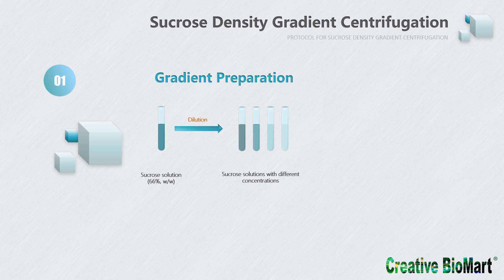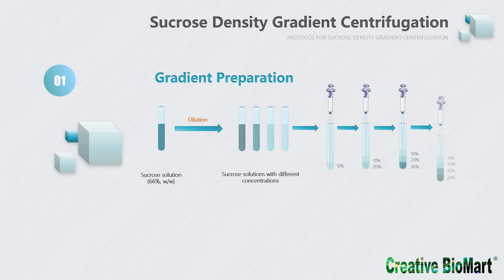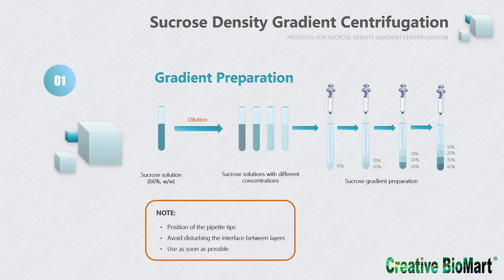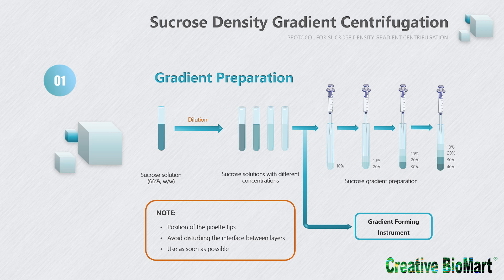After sucrose solutions of different concentrations are prepared, gradients are made by adding low concentration sucrose solution first before adding higher concentrations. For example, to prepare a 10% to 40% gradient, first add 10%, then 20%, 30%, and 40% solutions successively. When adding higher concentration sucrose solution, the tip of the pipette should be placed at the bottom of the centrifuge tube, taking care not to disturb the interface between layers. Additionally, use cold solution to prepare the gradients, and use the prepared gradients as soon as possible to avoid premature diffusion of the gradient layers. Gradient preparation can also be performed with the help of gradient-forming instruments.